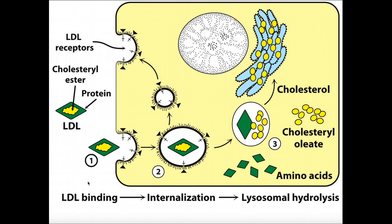The first step is LDL binding — the LDL particle gets bound to these receptors. Then we have step two: receptor-mediated endocytosis. As soon as this LDL particle binds to the LDL receptors, there are some changes in the shape of the membrane, and the LDL is engulfed and pulled in. It's internalized in an endosome.